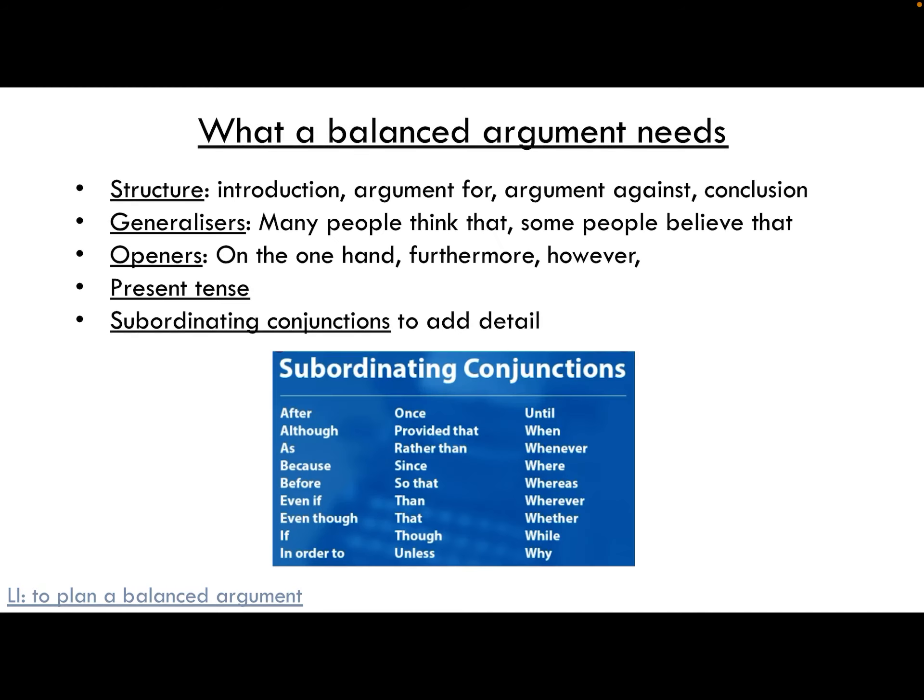So we're going to give information for and against. A balanced argument needs certain things — these are our features, also called organisational features or organisational devices. It's how we structure our writing. There's going to be an introduction, an argument for paragraph, an argument against paragraph, and a conclusion. Some of you might have more than one argument for paragraph, but you'll have the same number of arguments against paragraphs.